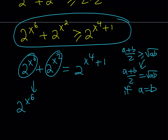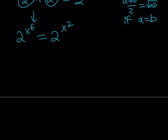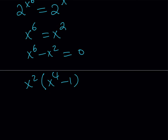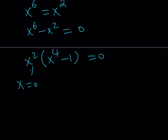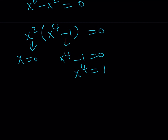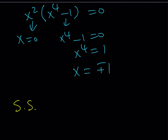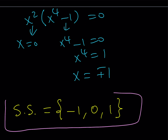Since 2 to the x⁶ equals 2 to the x², and the bases are equal, the exponents must be equal: x to the sixth equals x squared. We put everything on the same side and factor out x squared: x²(x⁴ − 1) = 0. Setting each factor to zero gives x equals 0, or x⁴ equals 1, which gives x equals plus or minus 1. So our solution set is {−1, 0, 1}. The solutions we found at the very beginning were the only solutions — there are no others.